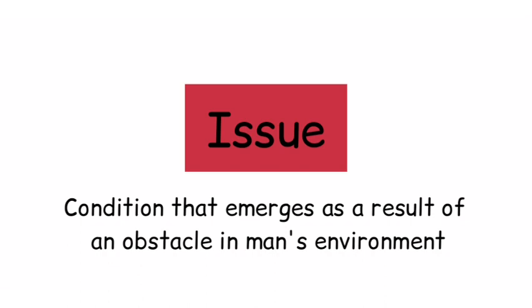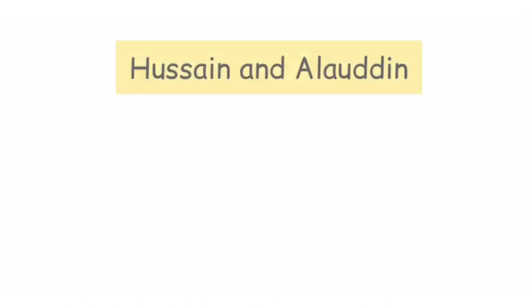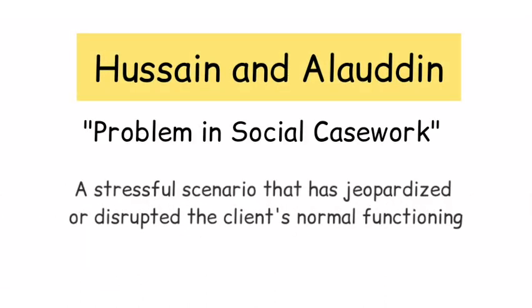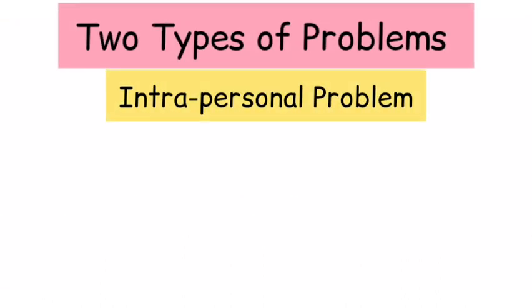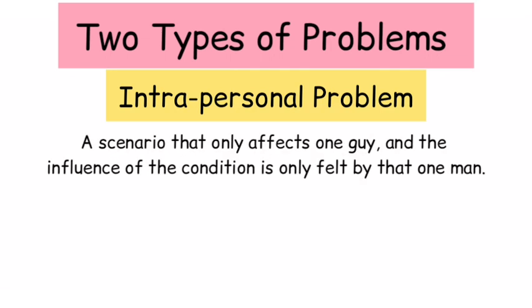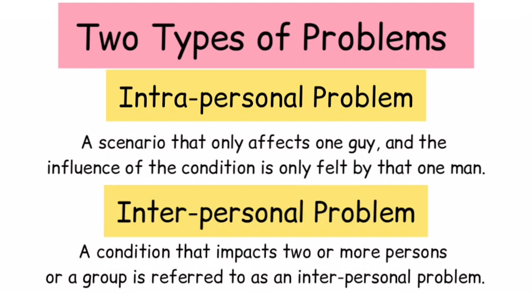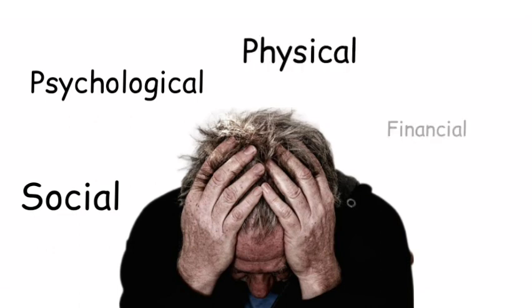The next element is the problem. A problem is a condition that emerges as a result of an obstacle in a person's environment that has challenged the adequacy of his attempts to operate effectively. According to Hussain and Aladin, a problem in social casework is a stressful scenario that has jeopardized or disrupted the client's normal functioning. There are two types of problems: the intrapersonal problem, which affects only one person, and the interpersonal problem, which impacts two or more persons or a group. The individual's issue could be social, psychological, physical, or financial in nature.